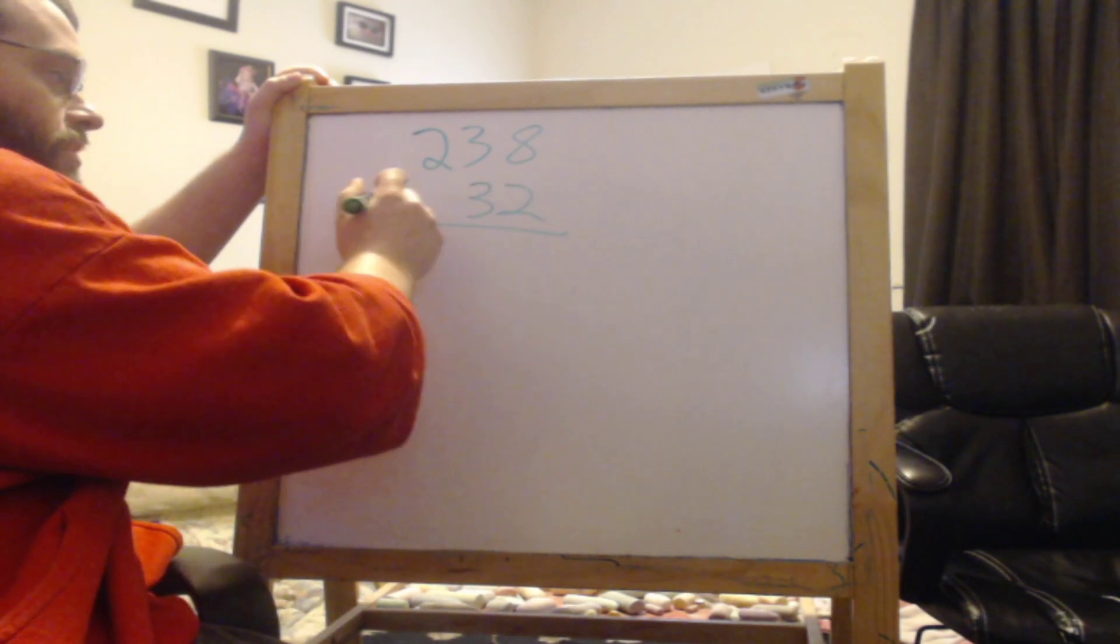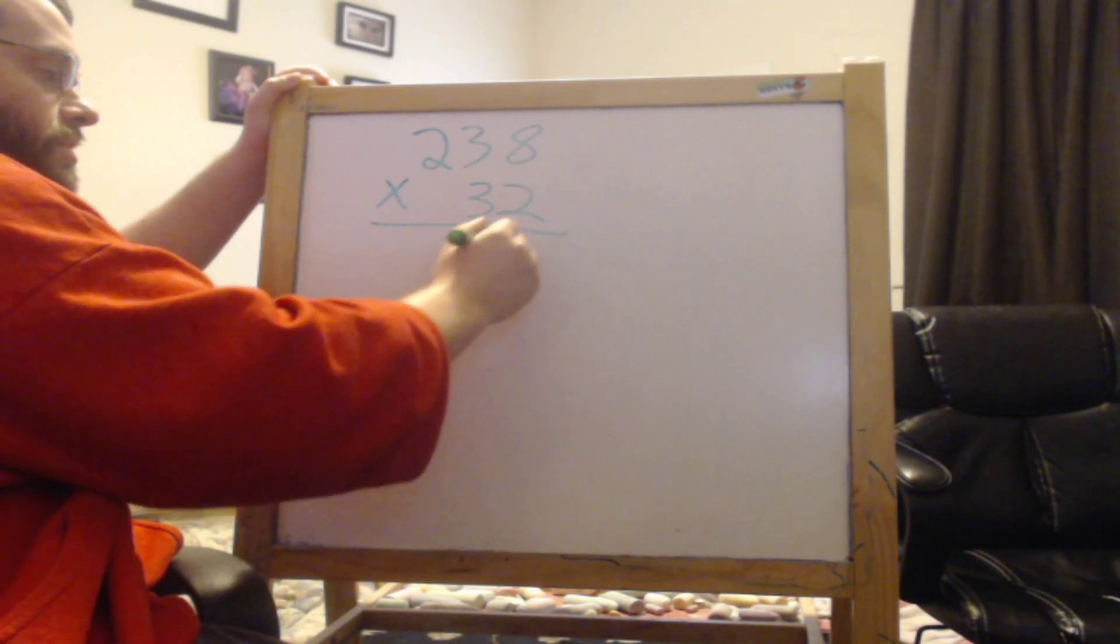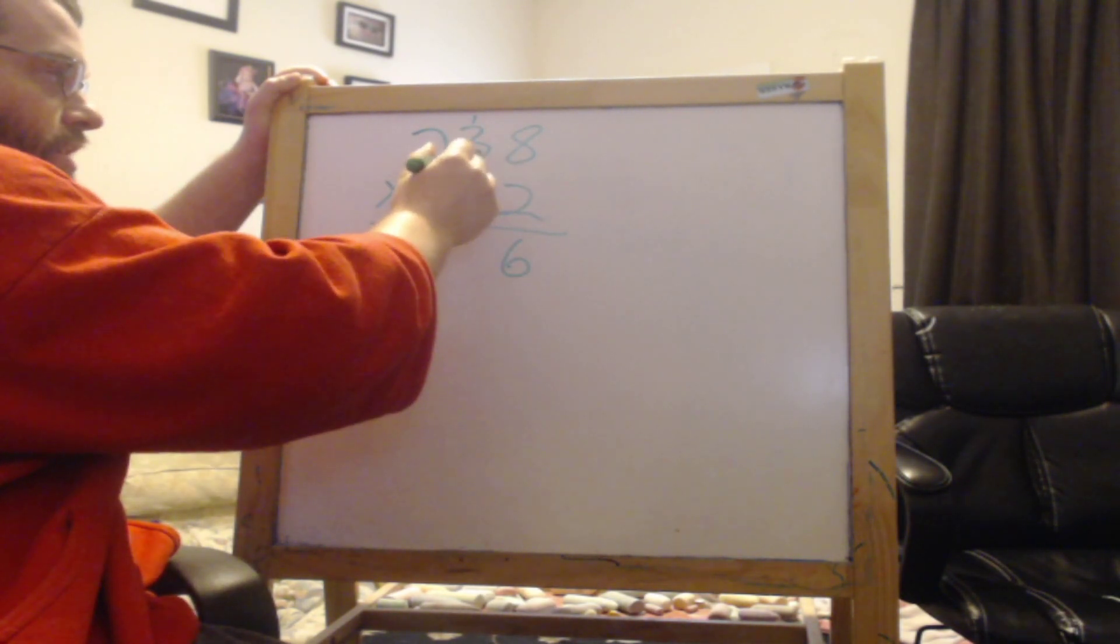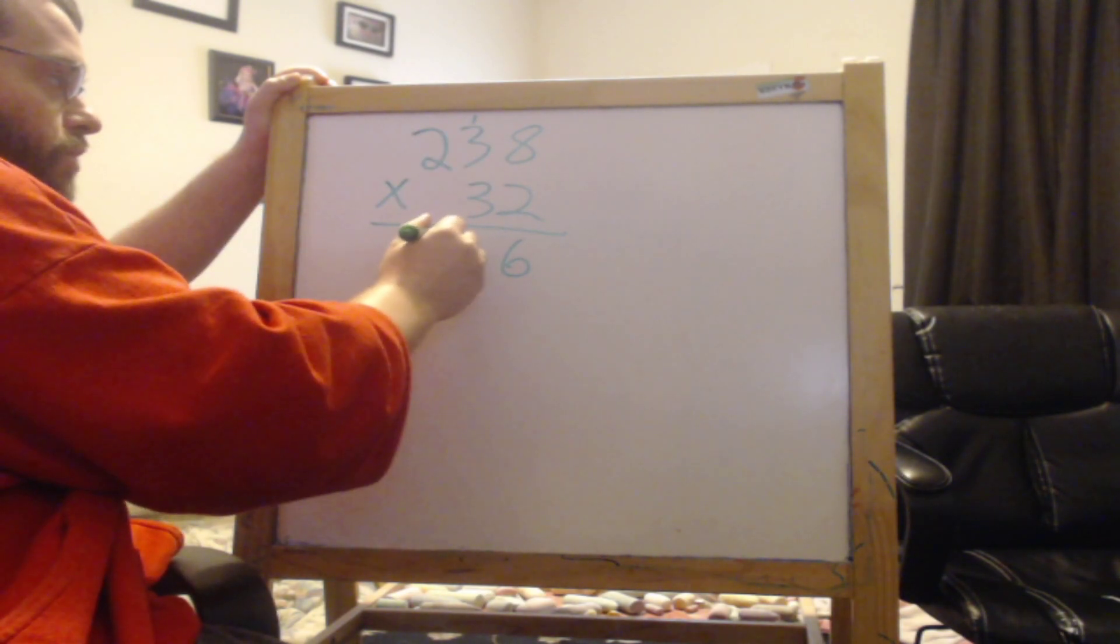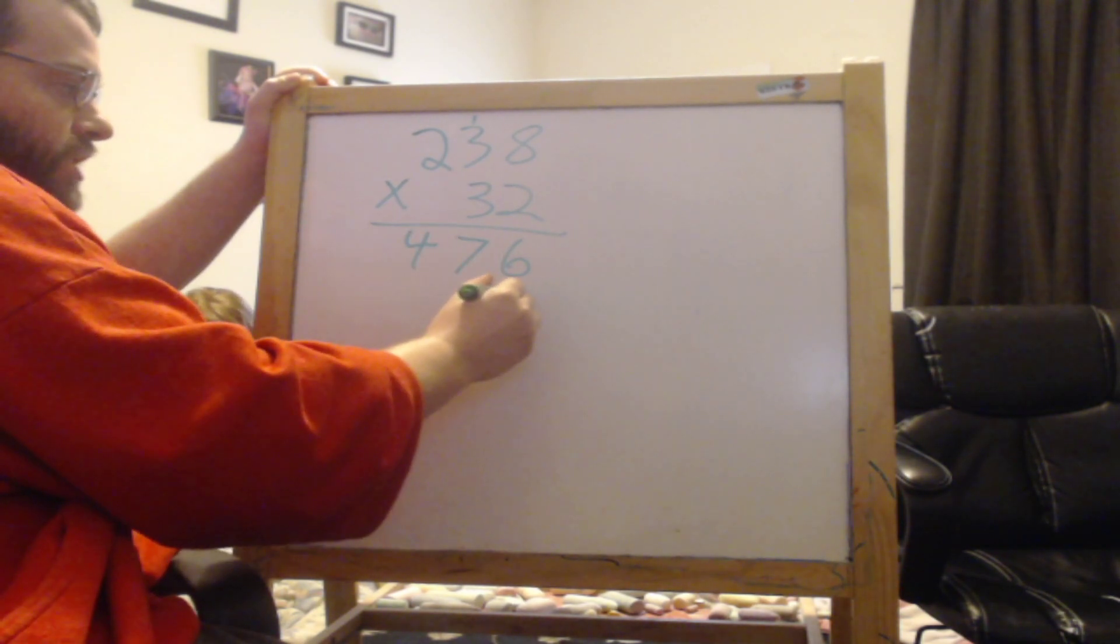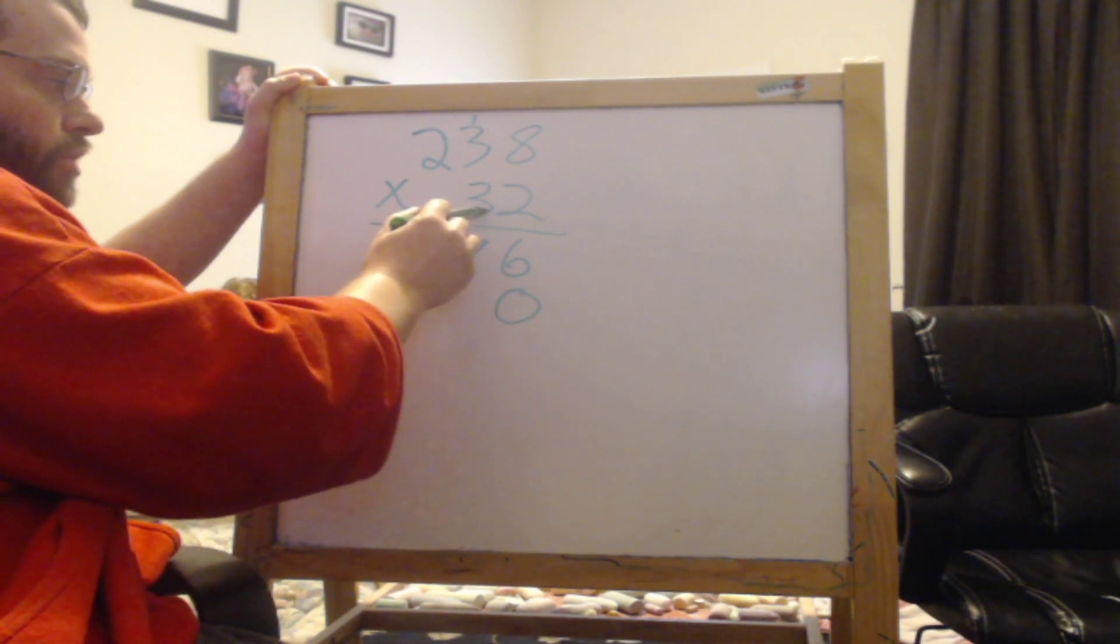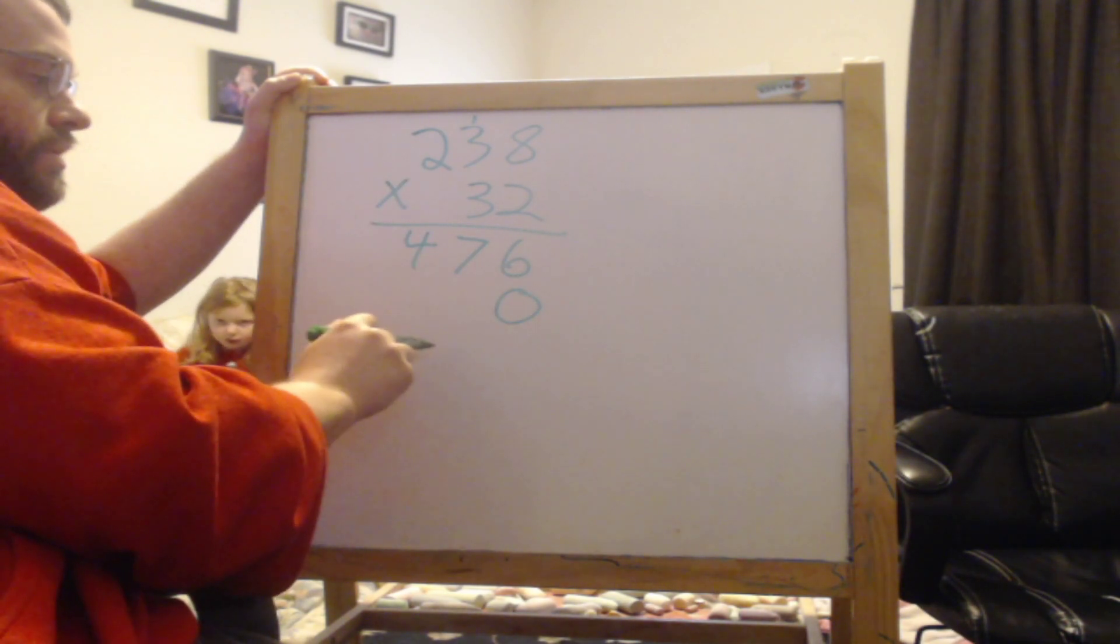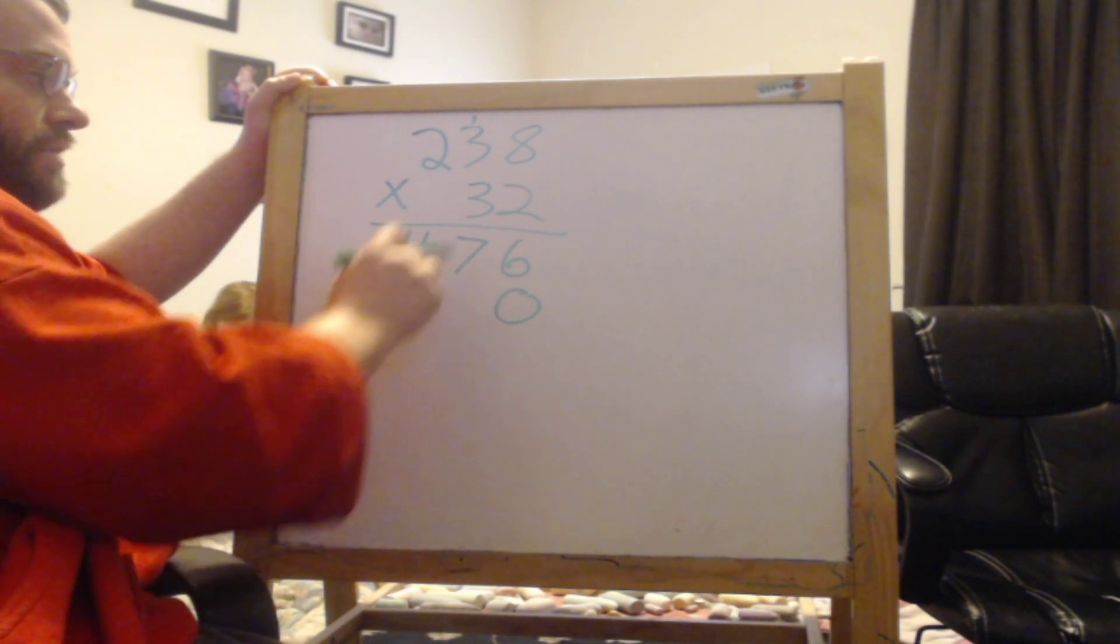2 times 8, 16. 2 times 3 is 6, plus 1, 7. 2 times 2 is 4. Put a 0 here because we're actually multiplying by 30 now, not by 3. The 0 at the end makes it 30.